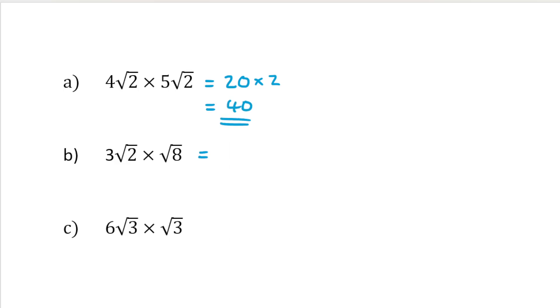Next, 3 root 2 times by root 8. Well, we can multiply the root 2 and the root 8, that will give us root 16. The 3 remains as it is. And of course, root 16 is 4. So this is 3 times by 4, which is 12.